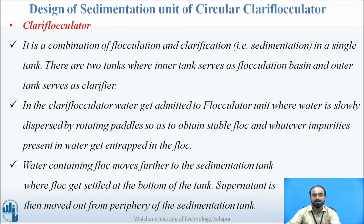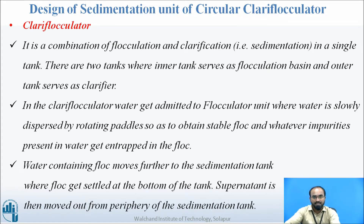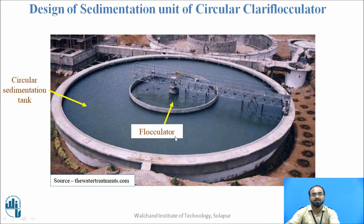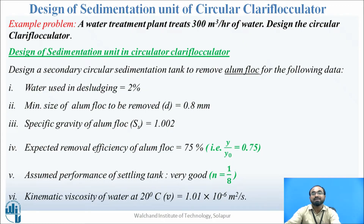We had seen this slide earlier also in the design of a flocculation unit of a circular clariflocculator. Basically, a clariflocculator is a combination of flocculation and sedimentation unit, where first the water will be coming into the flocculation unit where large amounts of impurities will be agglomerating with the help of slowly moving paddles, forming big size flocs. Then the water is shifted to the clarifier or outer unit, where these flocs will settle due to gravity. We are going to design that outer part today, for a flow rate of 300 meter cube per hour.